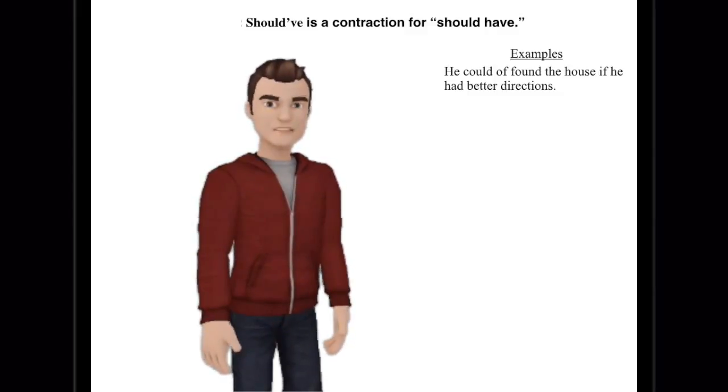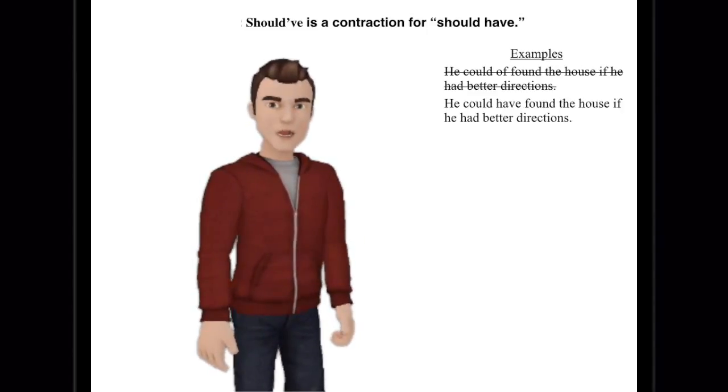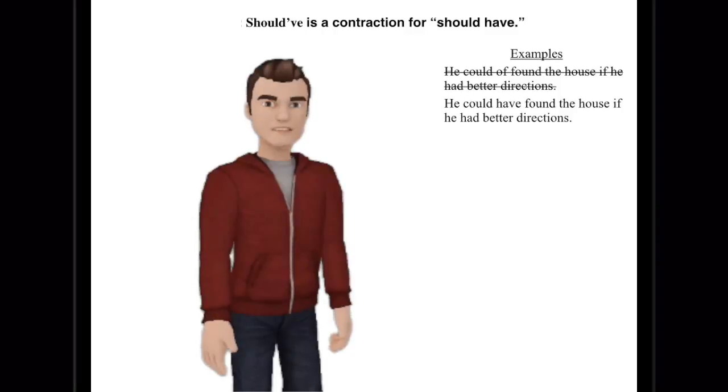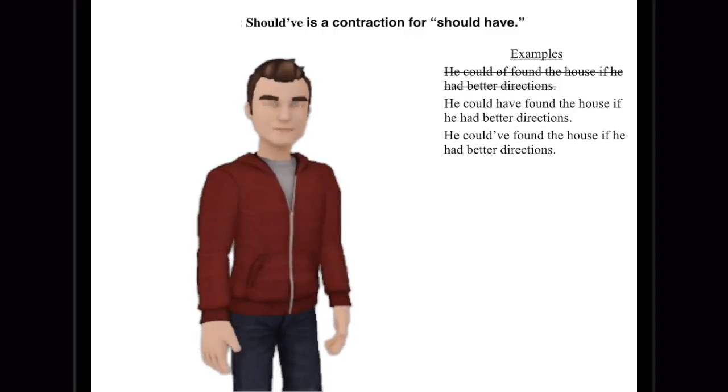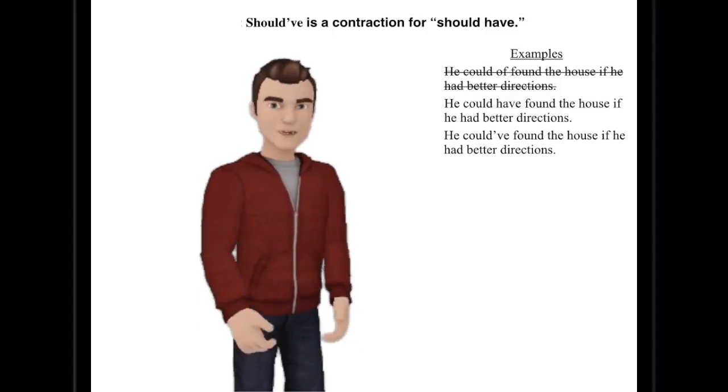he could've found the house if he had better directions. We need to change that to he could have found the house if he had better directions, or he could've, could apostrophe V E, found the house if he had better directions.